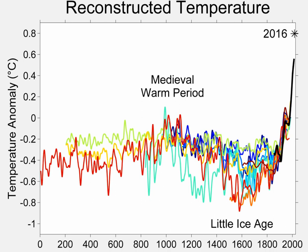Proxy measurements can be used to reconstruct the temperature record before the historical period. Quantities such as tree ring widths, coral growth, isotope variations in ice cores, ocean and lake sediments, cave deposits, fossils, ice cores, borehole temperatures, and glacier length records are correlated with climatic fluctuations.